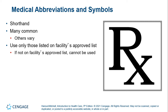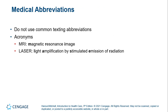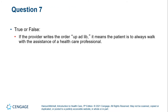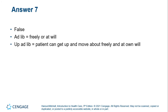Medical abbreviations include symbols as well. This is the shorthand we can use in a facility, but we should be very careful to only use those on the facility's approved list — it can't be used if it's not on the approved list. We don't want to use texting abbreviations. We do use acronyms like MRI and LASER. If the provider writes an order 'ad lib,' it does not mean the patient is to walk with the assistance of a healthcare professional — that's false. Ad lib means freely or at will, so this means the patient can get up and move about at their own will.